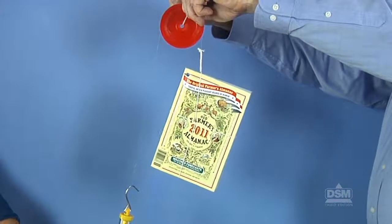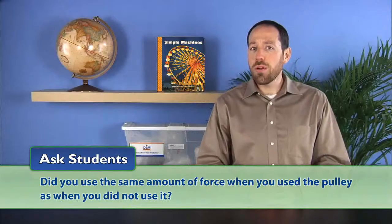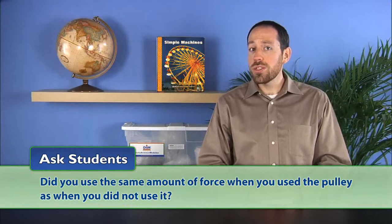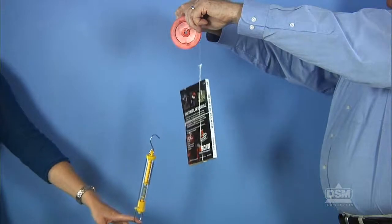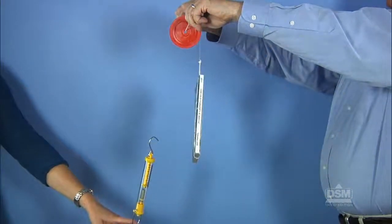Next, ask students did you use the same amount of force when you used the pulley as when you did not use it. Students should say yes, they used approximately the same amount of force. Then ask, then how did the pulley help you do work? Explain that the pulley transfers force applied in a downward direction to gain an upward lift. Point out that a person can often apply more force in a downward direction than in an upward direction.